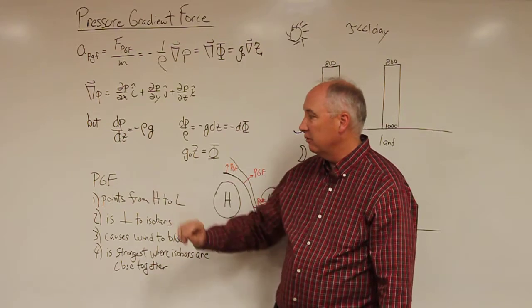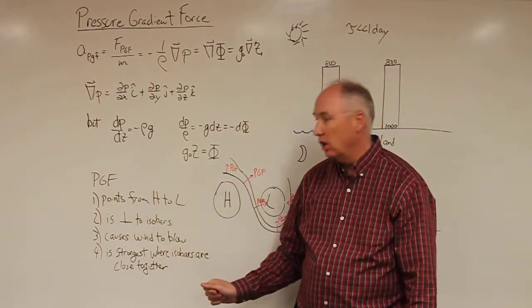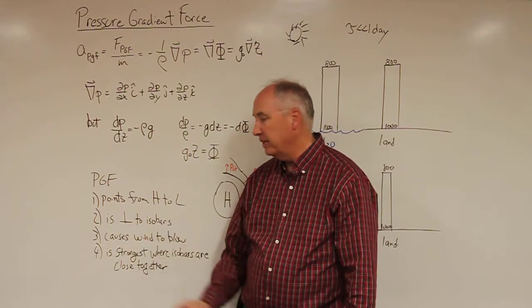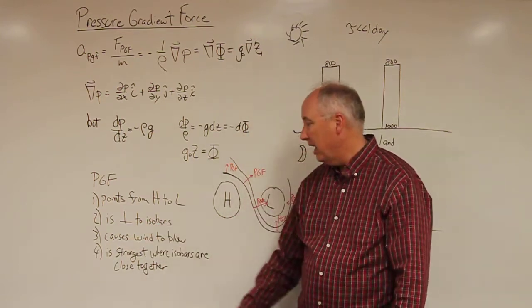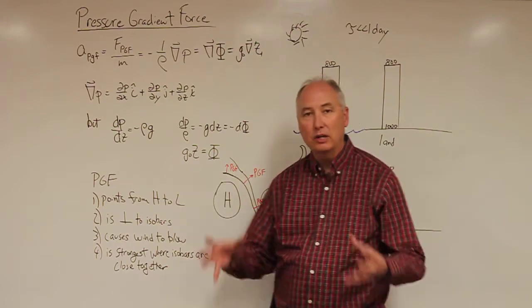So the pressure gradient force, things to note about it: it always points from high to low. It's always perpendicular to the isobars. It causes the wind to blow, and it's strongest where the isobars are actually close together.